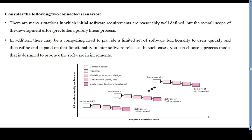The diagram for the incremental model shows five sets of activities: communication, planning, modeling, construction, and deployment. Software is released in incremental manner — first increment, second increment, third increment, up to the nth increment, based on the scope of the software development. The incremental model has the same phases as the waterfall model but is iterative in nature.